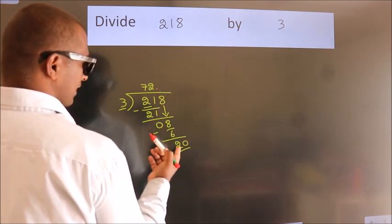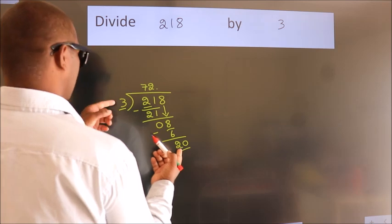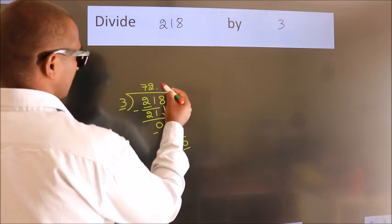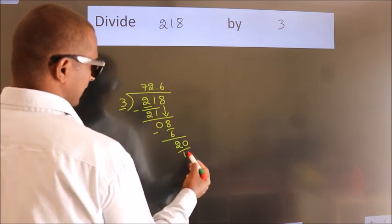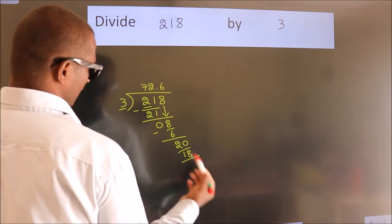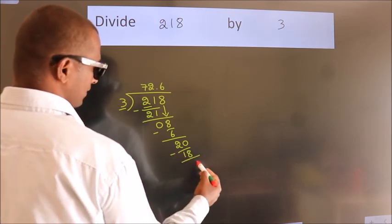So, 20. A number close to 20 in 3 table is 3 6 18. Now we subtract. We get 2.